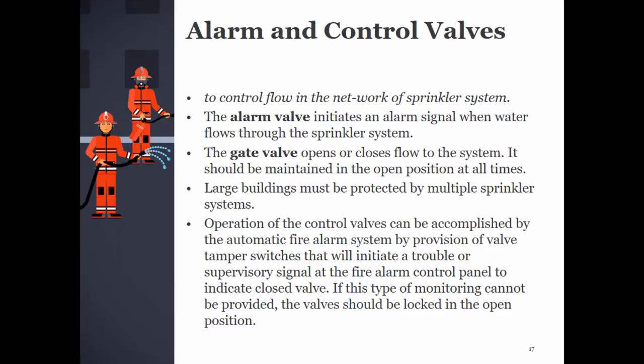Alarm and control valves: An alarm valve and gate valve control flow in the network of the sprinkler system. The alarm valve initiates an alarm signal when water flows through the sprinkler system. The gate valve opens or closes flow to the system and should be maintained in the open position at all times. Large buildings must be protected by multiple sprinkler systems, each having an alarm valve and gate valve. Operation of the control valves can be accomplished by the automatic fire alarm system; valve tamper switches initiate a trouble signal at the fire alarm control panel to indicate a closed valve.